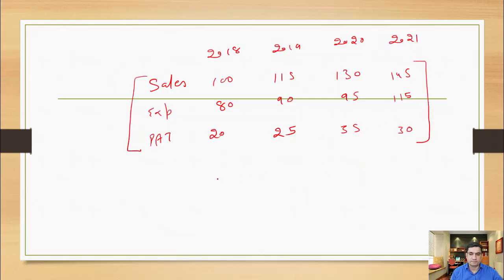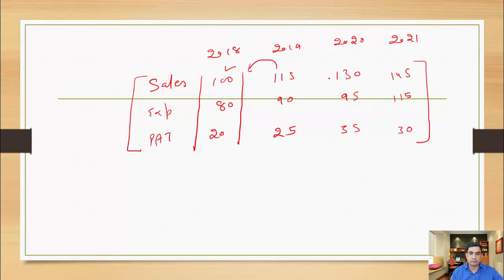Then expenses increased to ₹115 and profit was only ₹30. These are our income statement values for four years. In trend analysis, we keep 2018 as the constant base and calculate the growth rate of each item for all upcoming years — 2019, 2020, and 2021. The base year is set at 100%, and growth rates for each subsequent year are calculated relative to 2018, not to the immediately previous year.